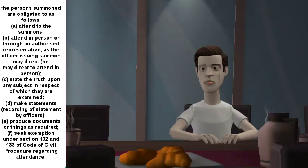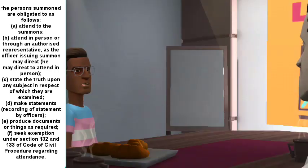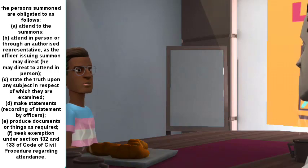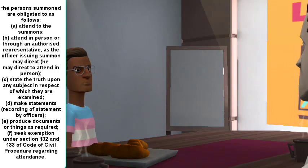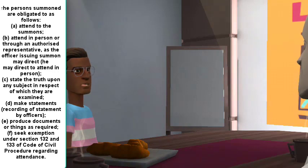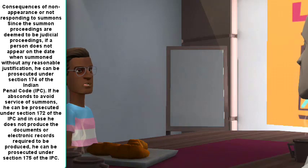What are the obligations of a person who has been issued and served with a summon? The persons summoned are obligated as follows: (a) attend to the summons; (b) attend in person or through an authorized representative as the officer issuing the summon may direct; (c) state the truth upon any subject in respect of which they are examined; (d) make statements — recording of statement by officers; (e) produce documents or things as required; (f) seek exemption under Section 132 and 133 of the Code of Civil Procedure regarding attendance.